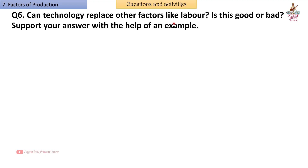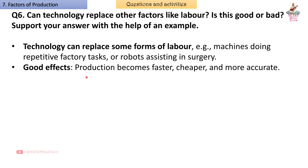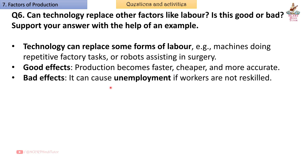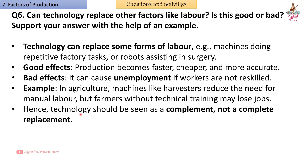Question 6: Can technology replace other factors like labor? Is this good or bad? Support your answer with an example. Answer: Technology can replace some forms of labor. Example: Machines doing repetitive factory tasks or robots assisting in surgery. Good effects: Production becomes faster, cheaper, and more accurate. Bad effects: It can cause unemployment if workers are not reskilled. In agriculture, machines like harvesters reduce the need for manual labor, but farmers without technical training may lose jobs. Hence, technology should be seen as a complement, not a complete replacement.